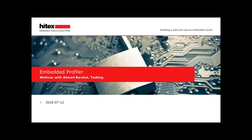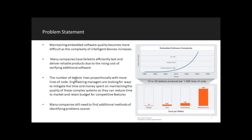I will start today the first webinar from the three-part series. The first one is the Embedded Profiler, a product from TASKING. First, I'd like to highlight the challenge it tries to solve. I take a snapshot from a survey by Texas Instruments which stated that in 2010 the number of lines of code in a modern car was 10 million, and up to 2018 this number jumped to 150 million lines of code.